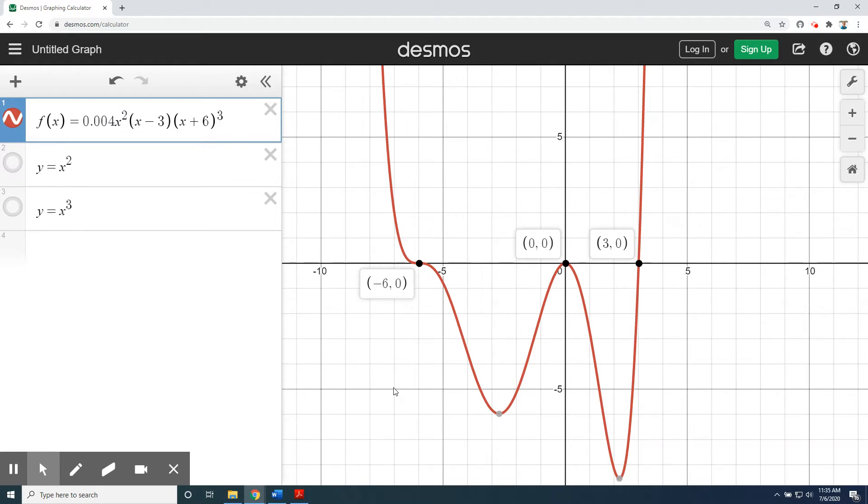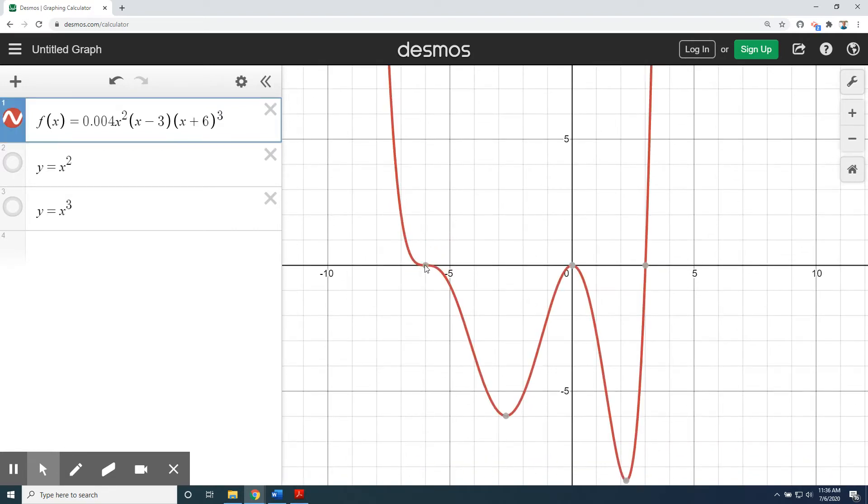But even more importantly than that, we can now examine the behavior of the graph at those locations. For example, take a look carefully here. In this part of the graph, at the x-intercept of negative 6, the red curve crosses the x-axis and keeps going. But at this part of the graph, at an x of 0, the red curve approaches the origin, touches it, and then bounces away. At this point over here, the x of 3, it crosses the x-axis and keeps going. Is there some sort of pattern that tells us when our graph will cross an axis versus when a graph will touch and bounce away?